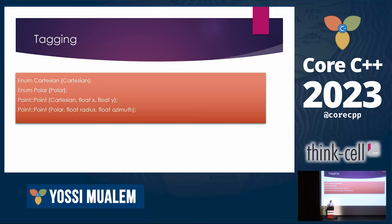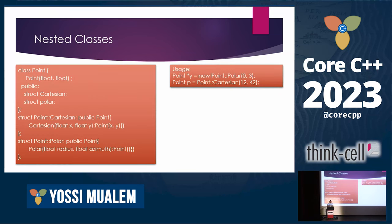Another option is to use tagging — we add two enum classes, one for polar and one for Cartesian, and our constructor takes an instance of one of these enums to distinguish which notation we're using. The last method: we add two nested classes for Cartesian and polar. Our constructor is private, and when we want to create an instance of class point, we create an instance of the nested class which creates the class point. I think this is quite an elegant solution.